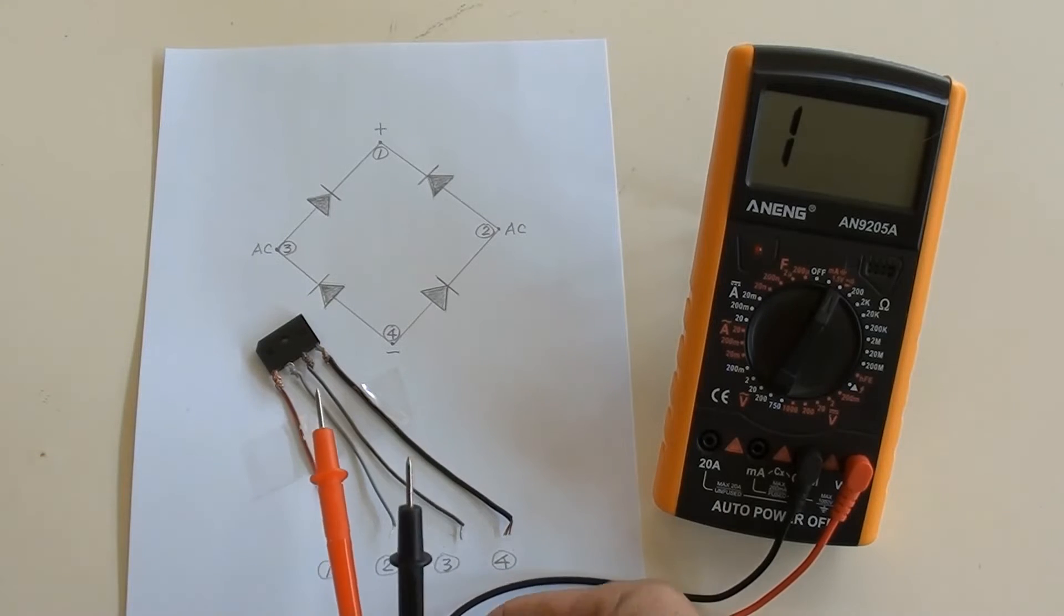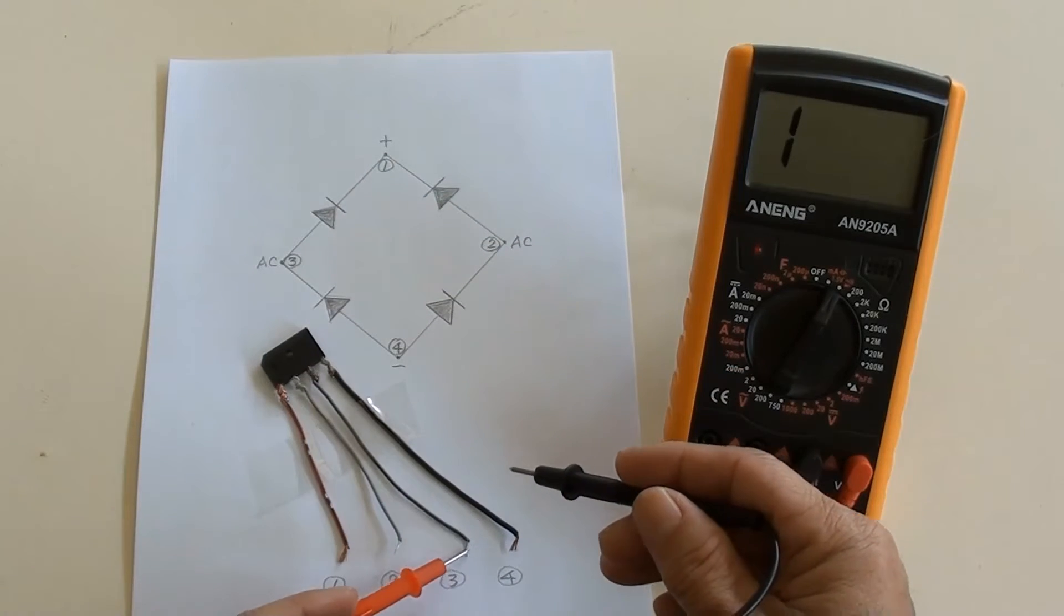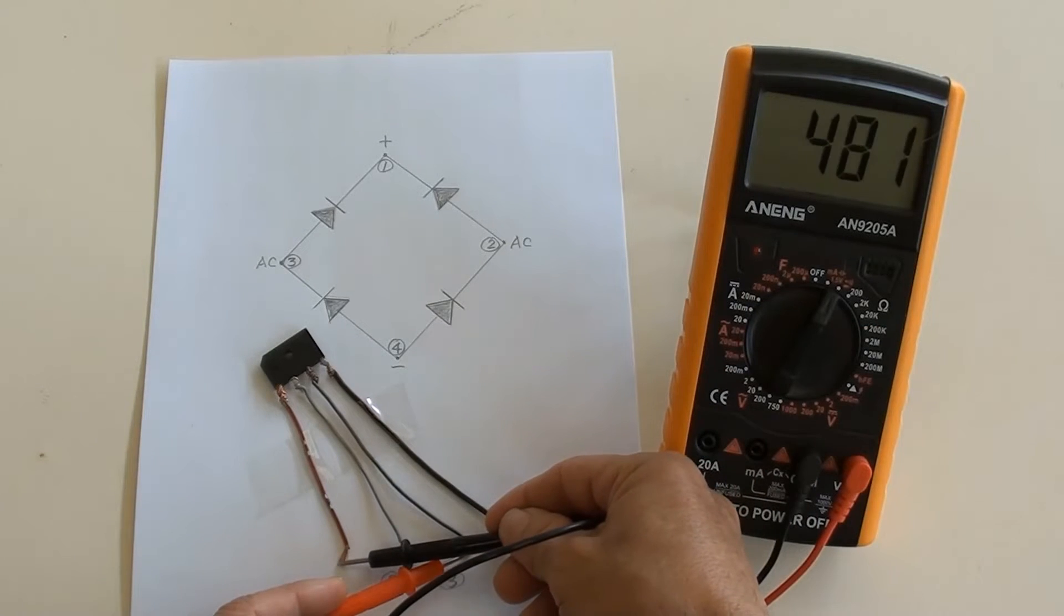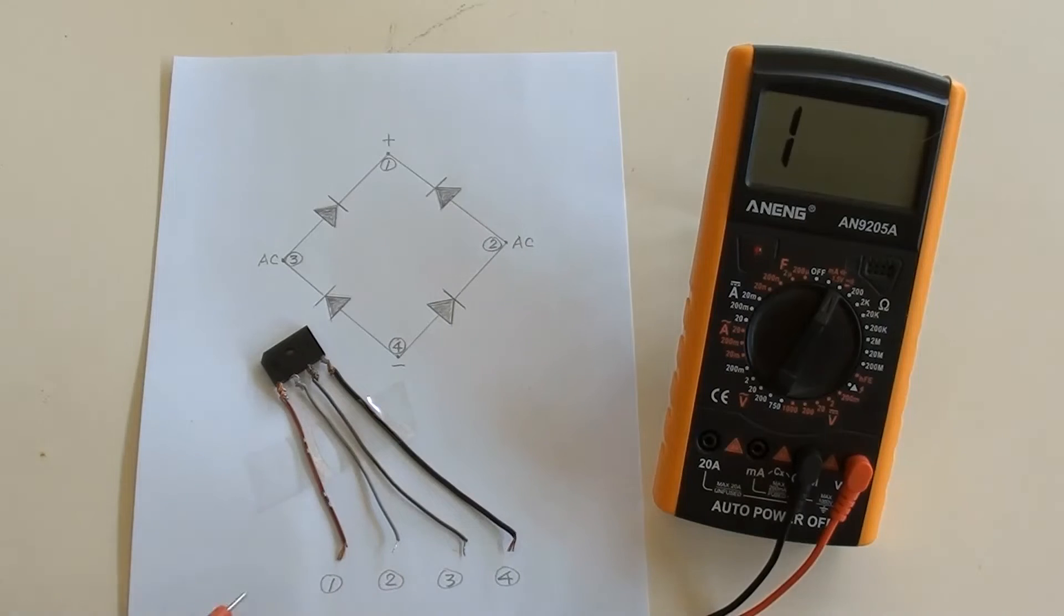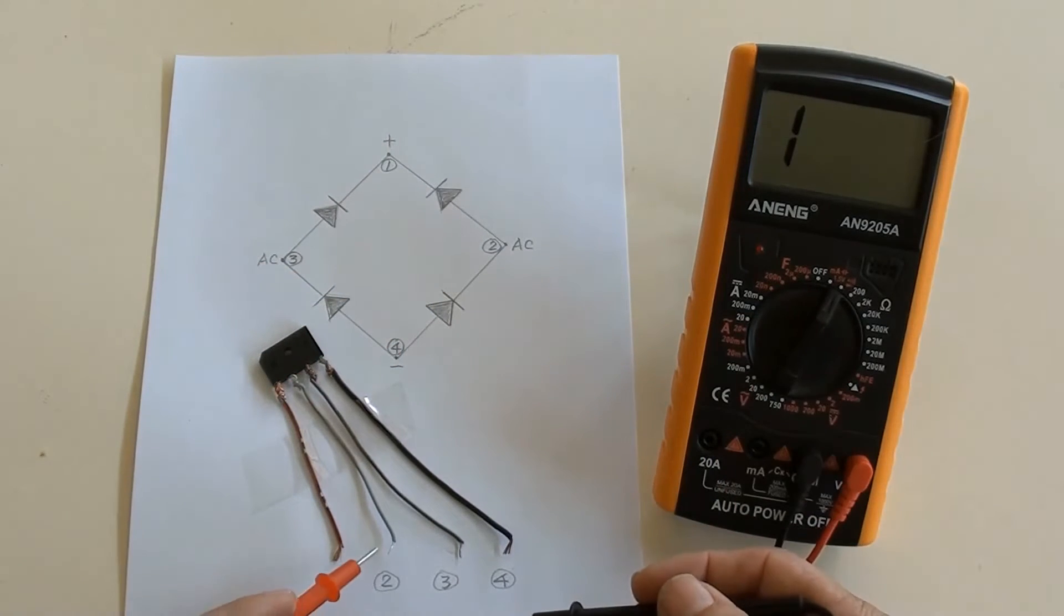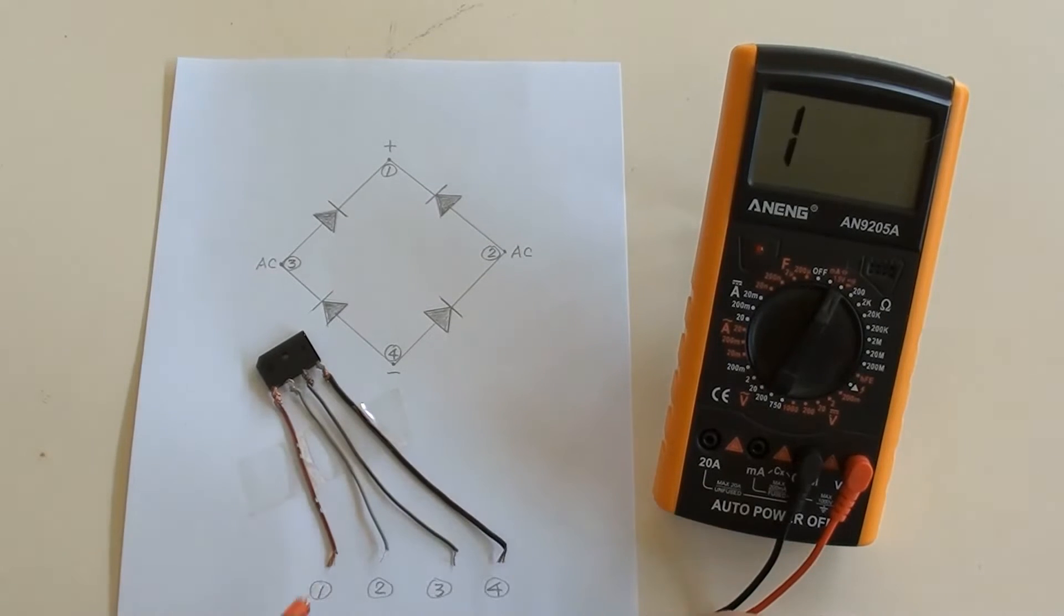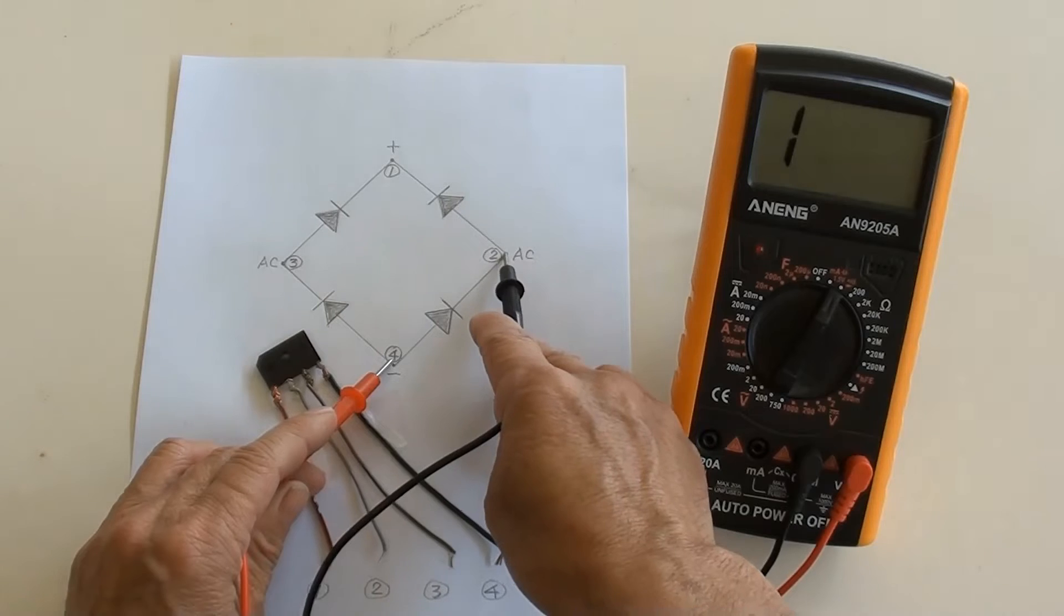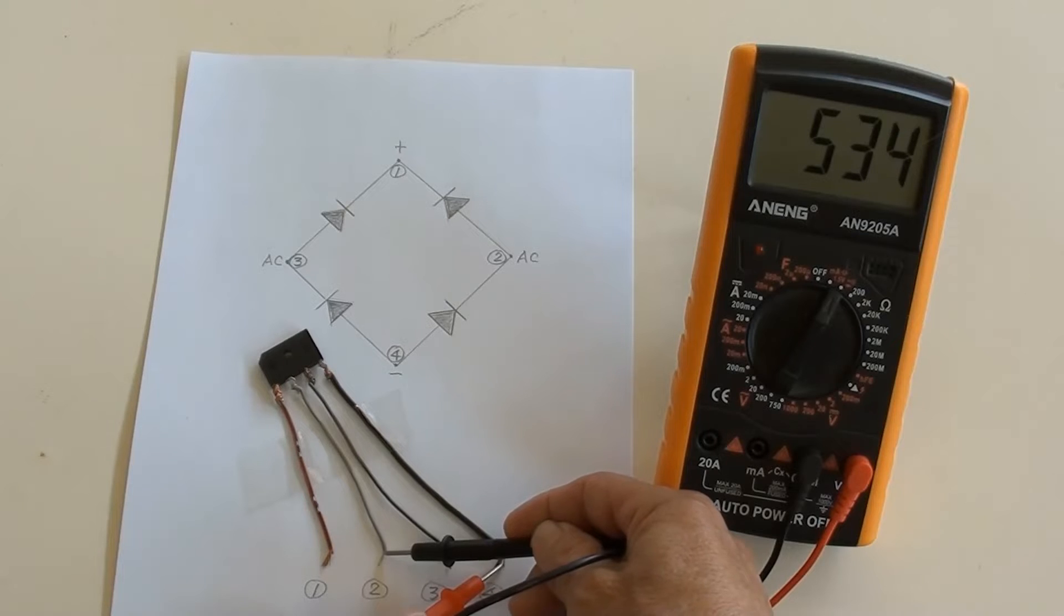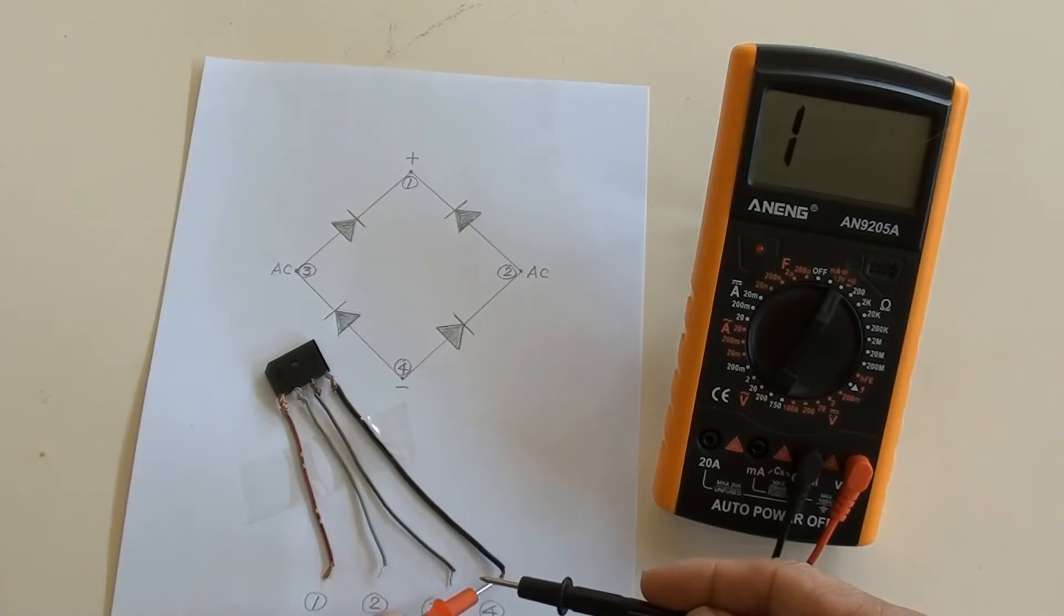Let me begin with forward polarity testing. Between three and one should be continuance. Between two and one, continuance. Between four and two, continuance. Between four and three, continuance.